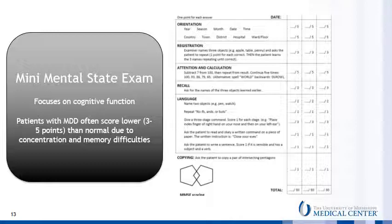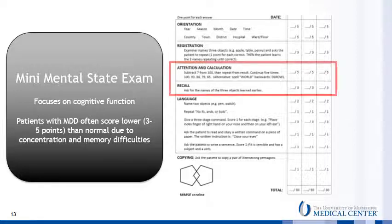Depression can have major effects on cognitive function. People in the midst of a depressive episode often score 10 or more points lower — that's a full standard deviation lower — on IQ tests than they do without depressive symptoms. Even with relatively simple cognitive testing instruments such as the Mini Mental State Exam or the Montreal Cognitive Assessment, patients with depressive disorders often score significantly lower than normal, largely due to concentration and memory difficulties. Orientation, registration, and language are generally spared.